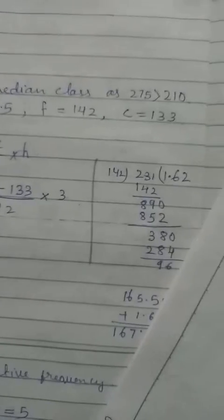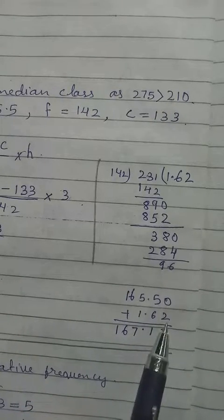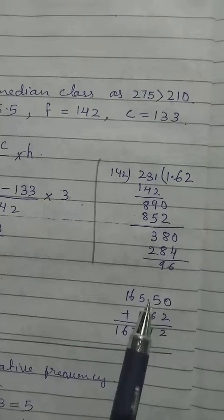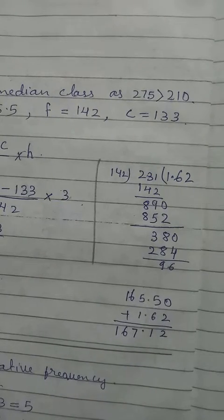They should be in line. So here 0.5. Then here we have two numbers after decimal. Here we have only one. So we put one zero. So that the decimal will be in line.